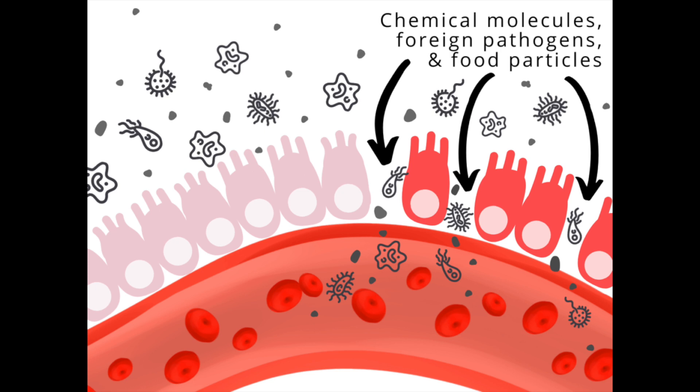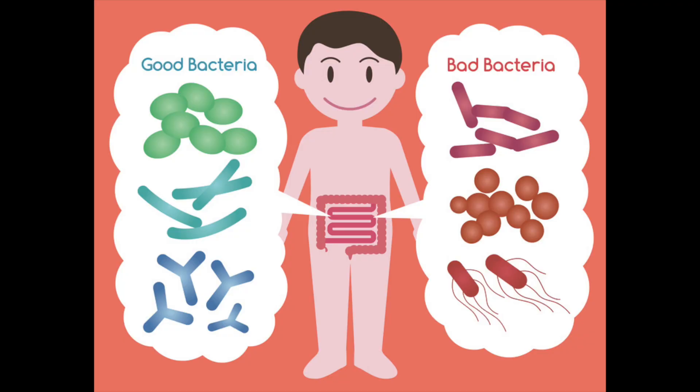An unhealthy gut lining — as in the case of a leaky gut — may have cracks and holes. These holes and cracks allow things like partially digested food, medications, toxins, heavy metals, and mold to penetrate the tissues and activate our immune system defenses. But that's not all — they also have the ability to damage those DAO-producing cells, and they can change the gut flora, those good and bad bacteria in the gut, which can lead to elevated levels of histamine in the digestive tract and beyond.